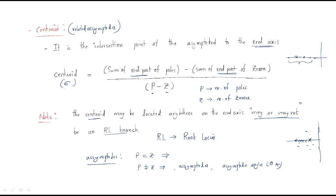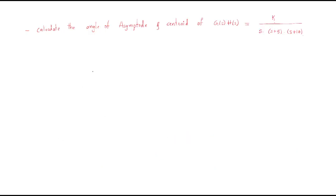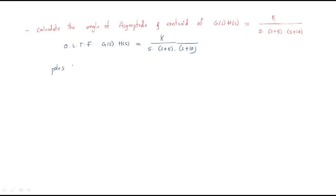Now we will understand asymptote angle and centroid by solving a problem. The problem is: calculate the angle of asymptote and centroid of G(s)H(s) = K divided by s(s+5)(s+10). Here we are given the open loop transfer function, so we write down G(s)H(s) = K / [s(s+5)(s+10)].